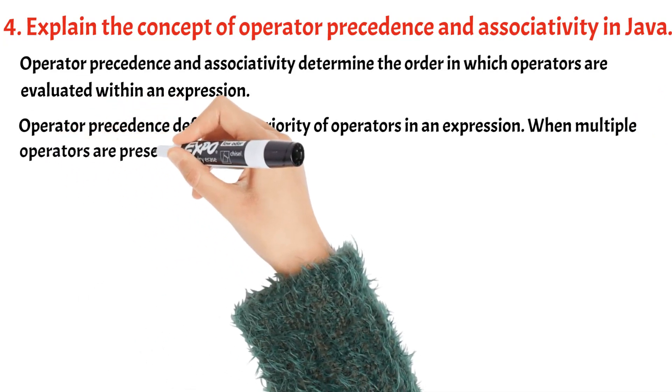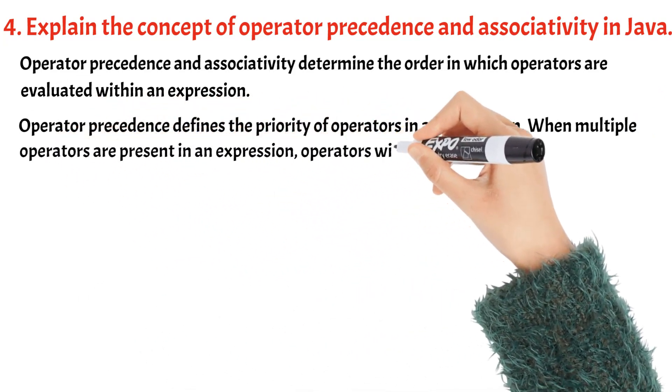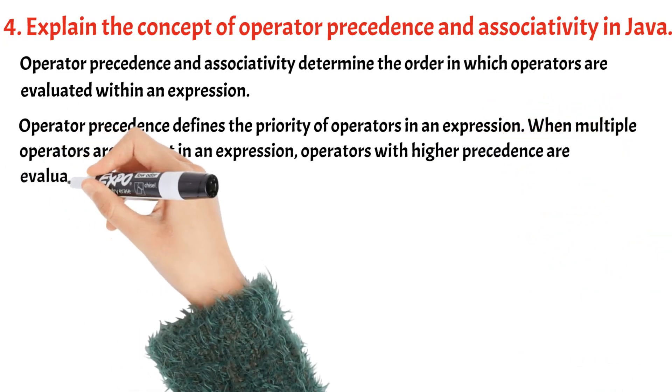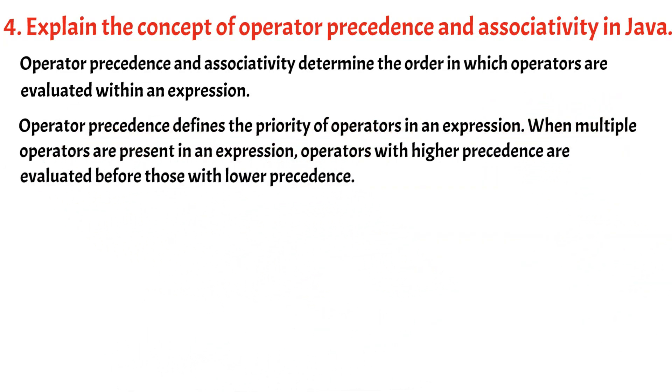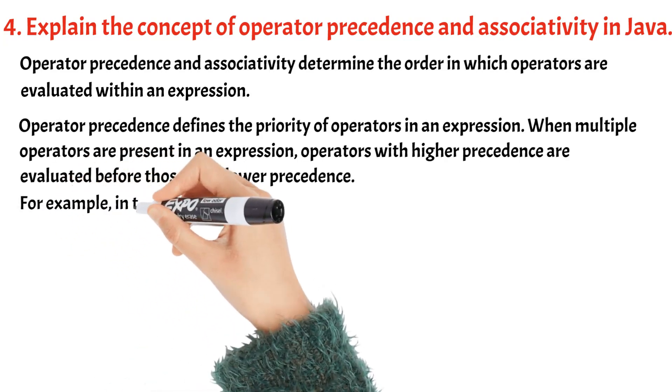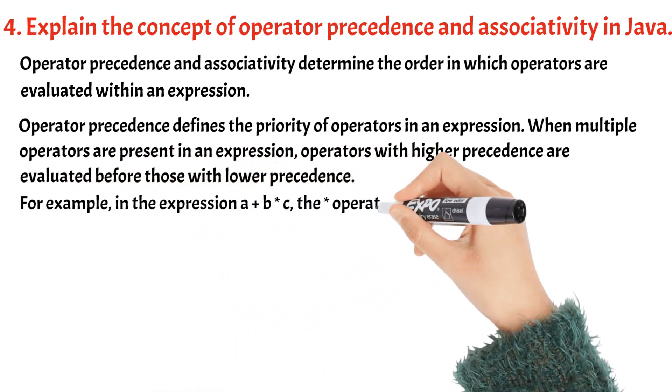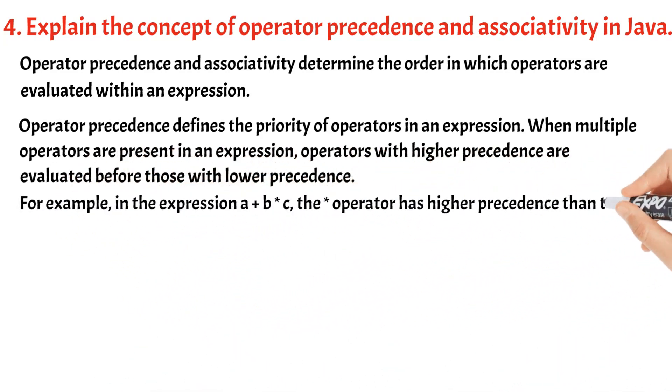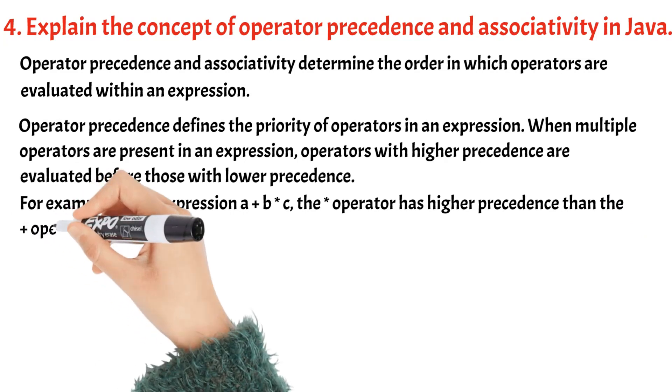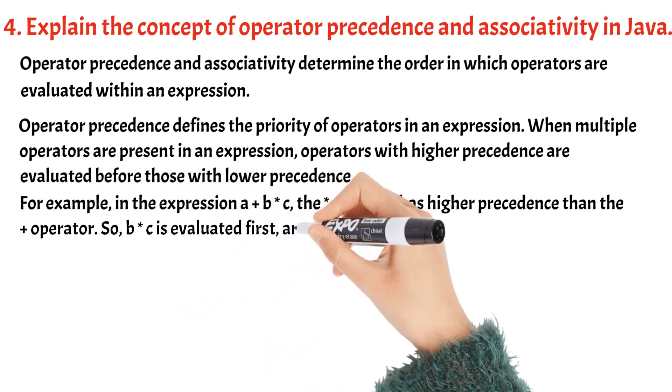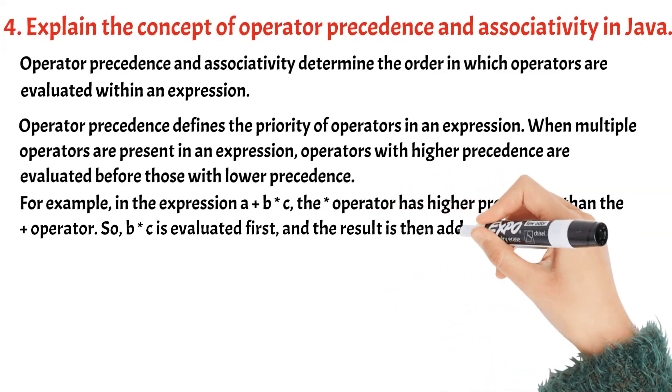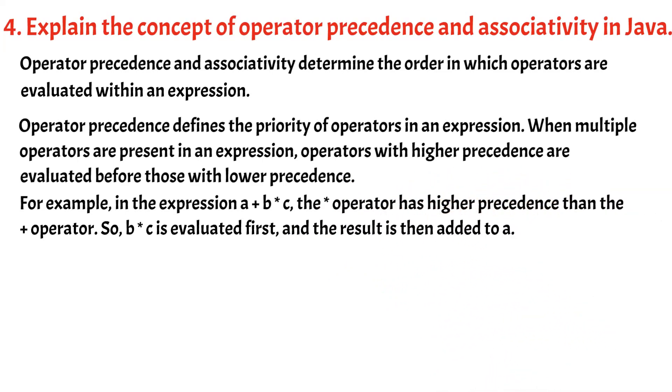When multiple operators are present in an expression, operators with higher precedence are evaluated before those with lower precedence. For example, in the expression a + b * c, the asterisk operator has higher precedence than the plus operator. So b * c is evaluated first and the result is then added to a.